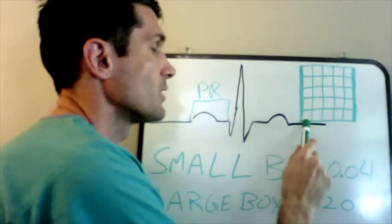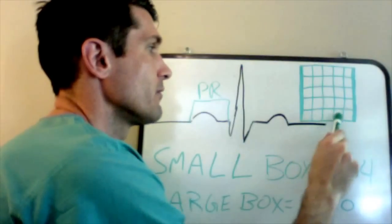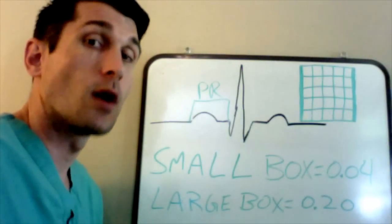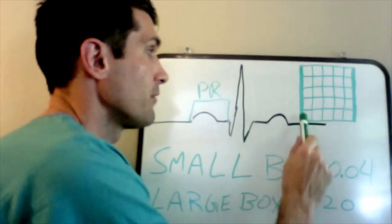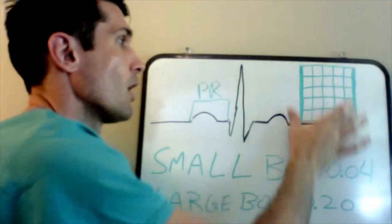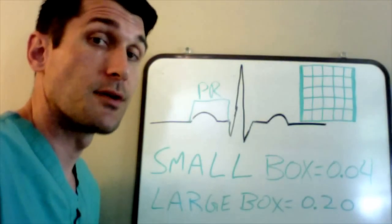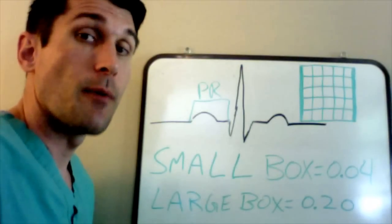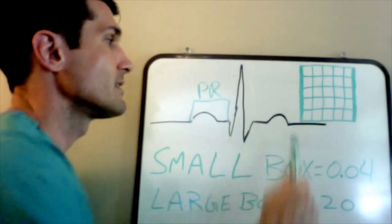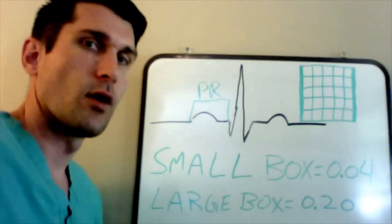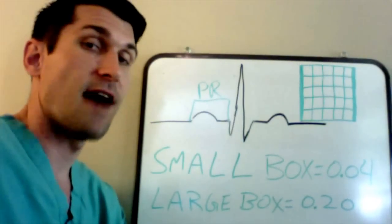Each small box is worth 0.04 seconds. If we add five small boxes together, we get one large box, which is worth 0.20 seconds. Large boxes are denoted by a thicker line on the grid paper. So when you're measuring things like the PR interval or the QRS, you count the number of boxes from the beginning to the end of whatever you're calculating — small boxes are 0.04 seconds and large boxes are 0.20 seconds.